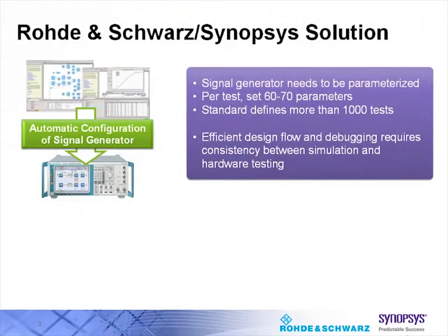To test the device or component designed for an LTE system using a Rohde & Schwarz vector signal generator, parameters on this instrument need to be configured for the given test. In a typical test case, there are about 60 to 70 parameters that need to be set.